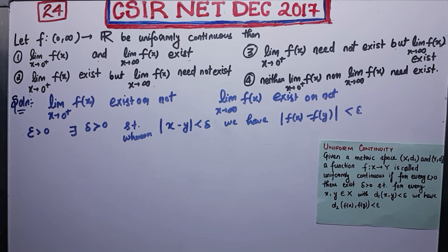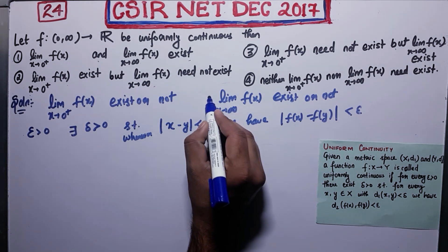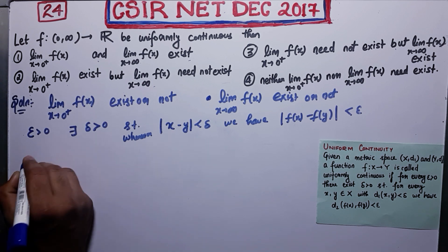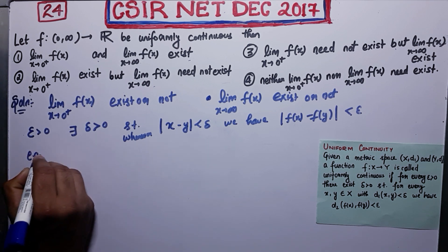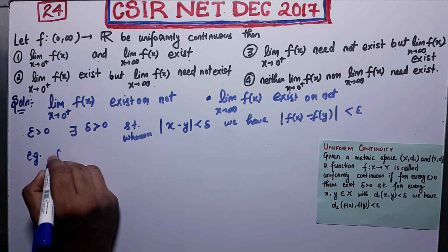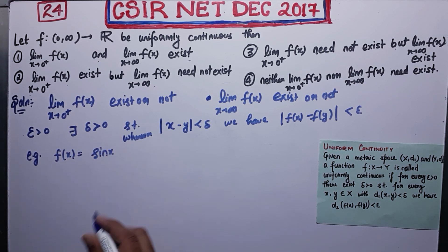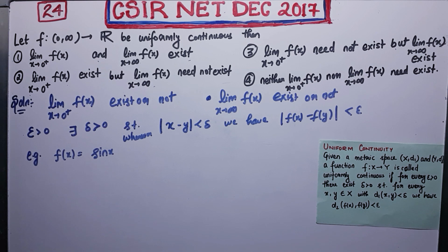I'm going to check the limit as x→∞ first. I'm going to take a counter-example for it. The counter-example is f(x) = sin(x). This is well-defined over this domain. The only thing you need to prove is that this is uniformly continuous, and then you can use it as your example.